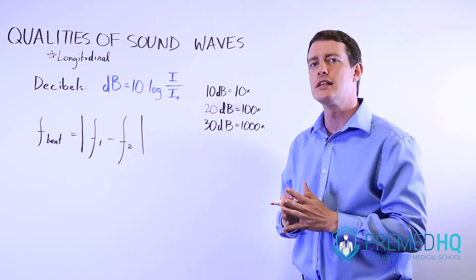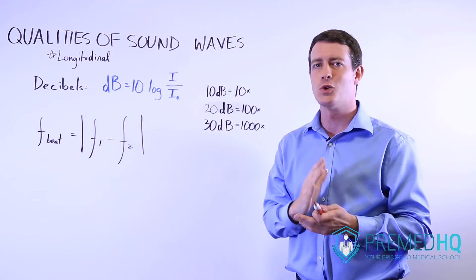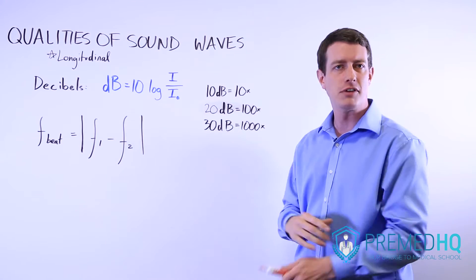That way you can realize that if something is 40 decibels apart, then it's going to be a one with four zeros or 10,000 times as intense as the reference sound intensity.